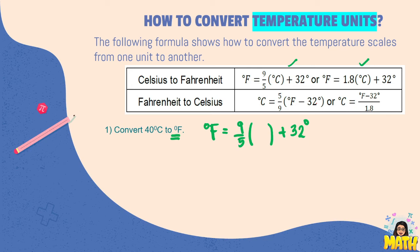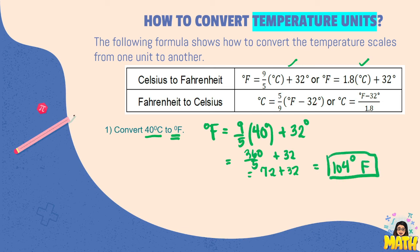So nine-fifths times degrees Celsius plus 32 degrees. You just need to substitute here the given value, so we have 40 degrees, we put it here, and then we need to solve. 40 times 9 is 360 divided by 5, that will give us 72 plus 32, that is 104 degrees. So this one will be equal to 104 degrees Fahrenheit.